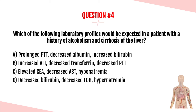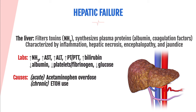Question number four. Which of the following laboratory profiles would be expected in a patient with a history of alcoholism and cirrhosis of the liver? A, prolonged PTT, decreased albumin, and increased bilirubin. B, increased ALT, decreased transferrin, and decreased PTT. C, elevated CEA, decreased AST, and hyponatremia. Or D, decreased bilirubin, decreased LDH, and hypernatremia. The answer is A: prolonged PTT, decreased albumin, and increased bilirubin. The liver has multiple jobs — it filters medications and toxins, most significantly ammonia, and it synthesizes plasma proteins including albumin and coagulation factors such as prothrombin and fibrinogen.